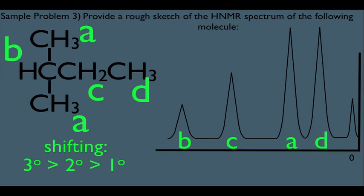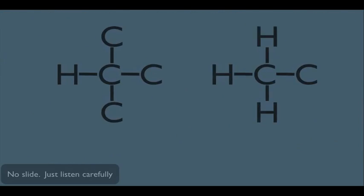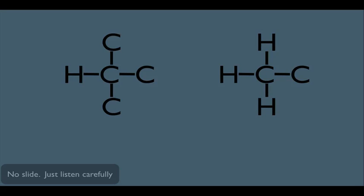Now, why do we observe this shifting trend? Well, let me show you an example here. Let's say we have two hydrogens here. Notice this hydrogen on the left here happens to be a tertiary hydrogen, and this hydrogen on the right over here happens to be a primary hydrogen. Now remember, carbon and hydrogen roughly have the same electronegativity, but carbon is slightly more electronegative than hydrogen.